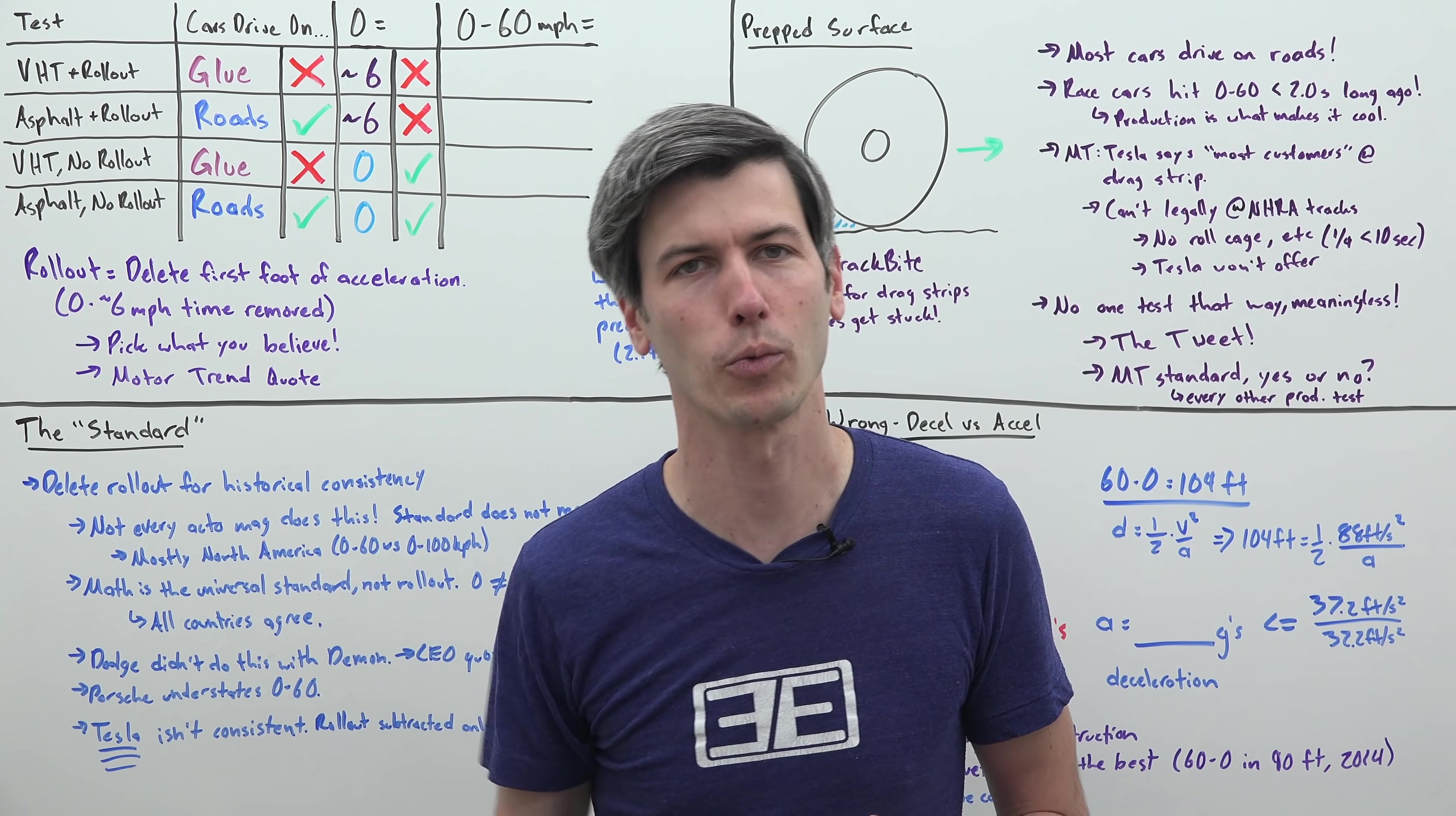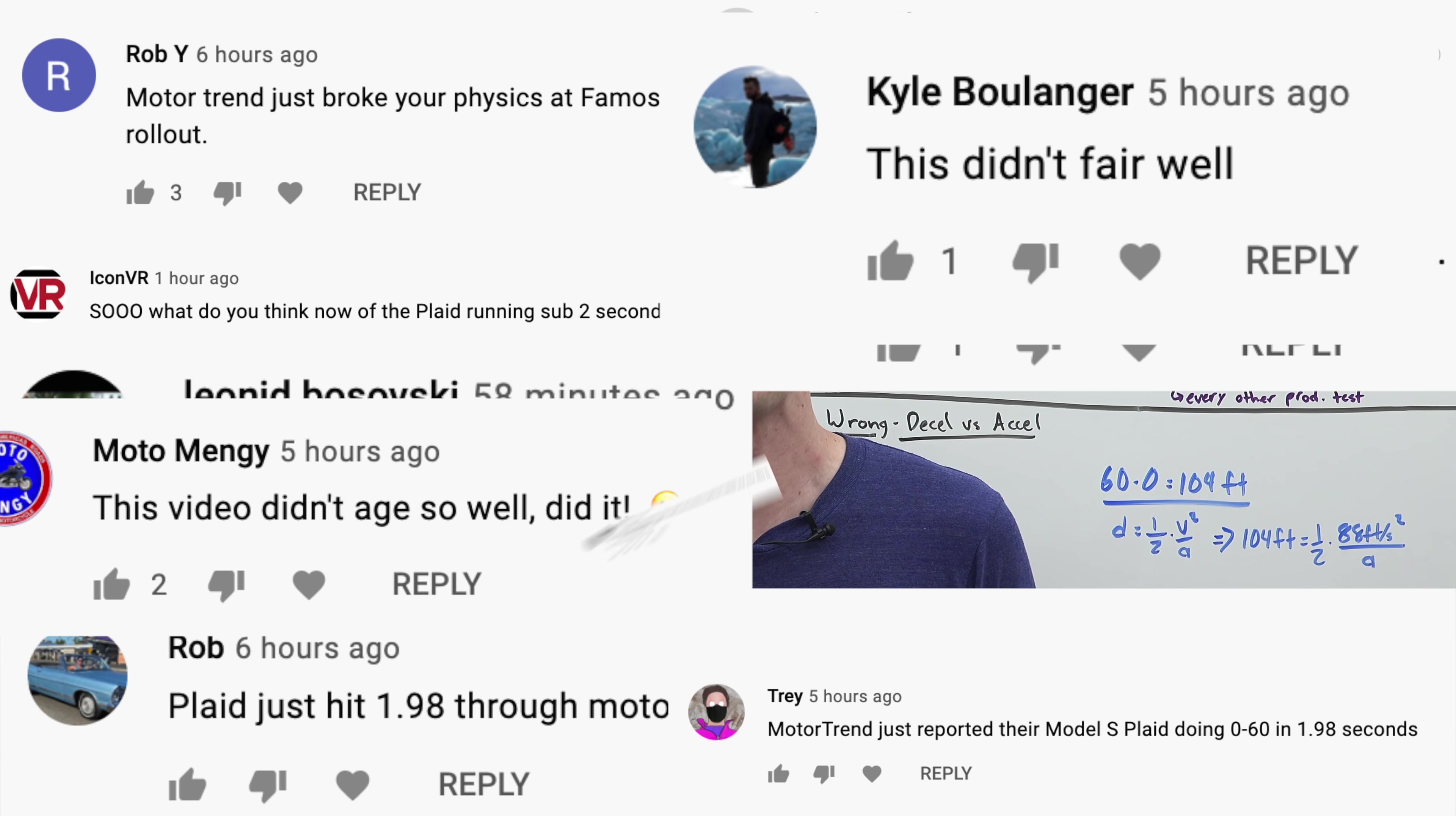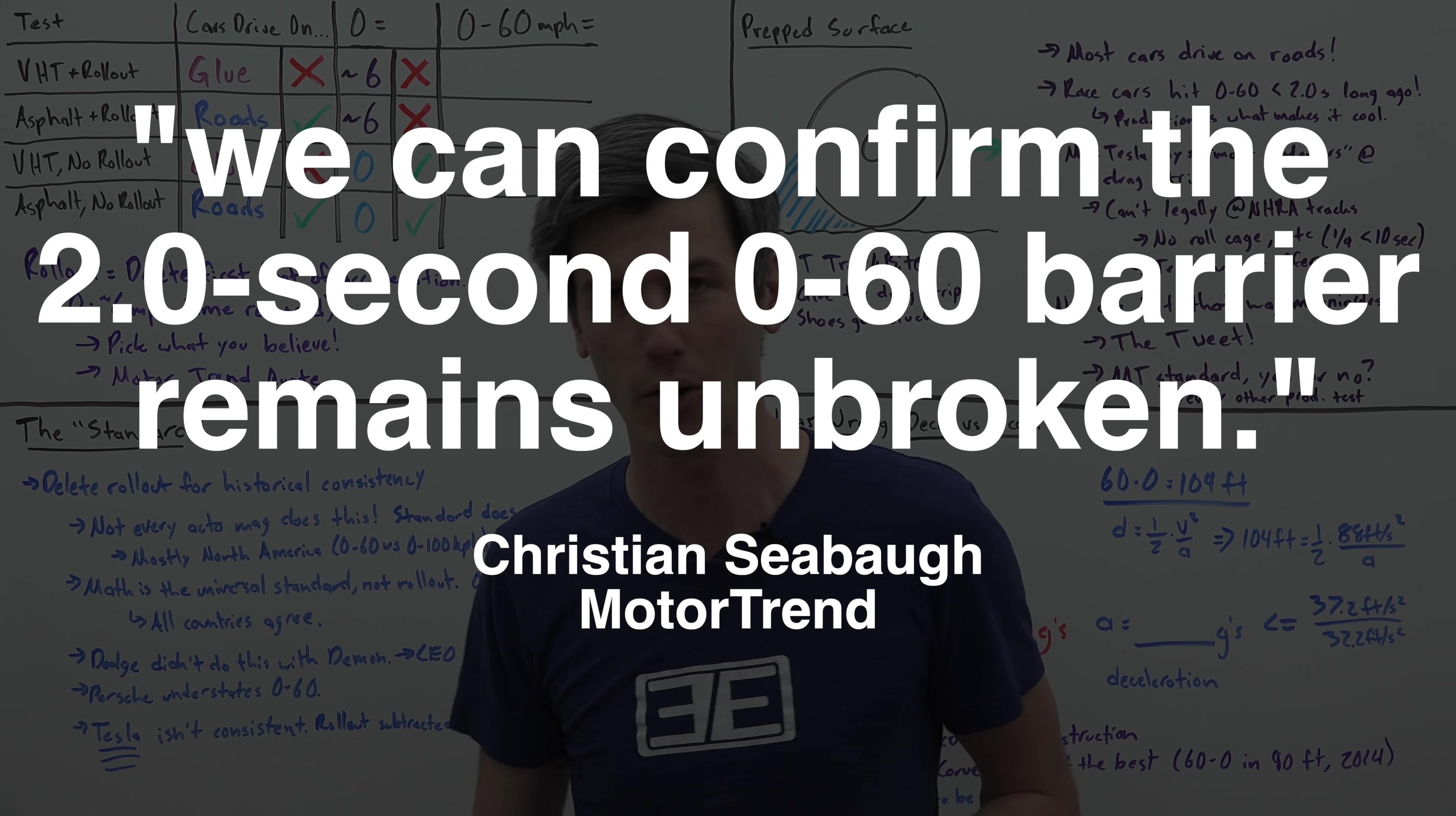About six weeks later Motor Trend actually got their hands on a Model S Plaid and they were able to test it, upon which many of you came back to my video and commented basically saying I have no idea what I'm talking about. Unfortunately, if you read Motor Trend's article, they said we can confirm the 2.0 second 0-60 barrier remains unbroken.